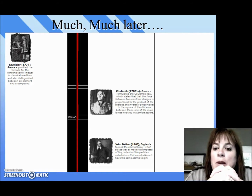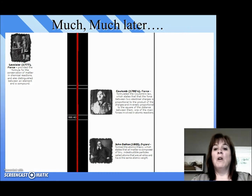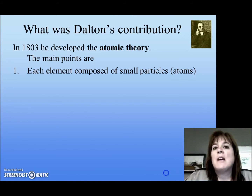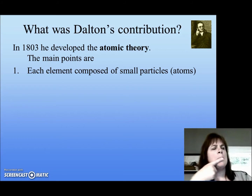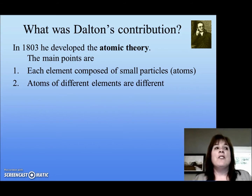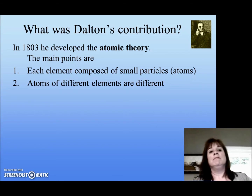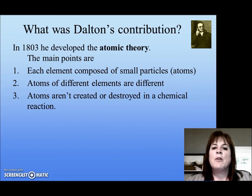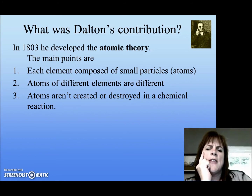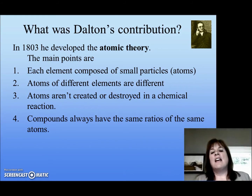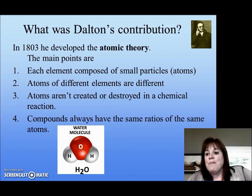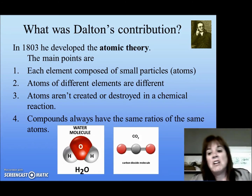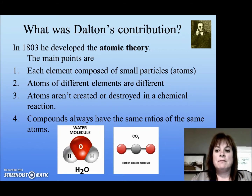And then the later development by John Dalton. John Dalton was actually a schoolteacher who in the 1800s came up with what we call modern atomic theory, and most of it is pretty true today. He said that each element is composed of small particles called atoms; that atoms of different elements are different — so the atom that makes up iron is different from the atom that makes up gold; that atoms aren't created or destroyed in a chemical reaction; and that compounds always have the same ratios of the same atoms. So water always has two hydrogens and an oxygen, and carbon dioxide always has one carbon and two oxygens.